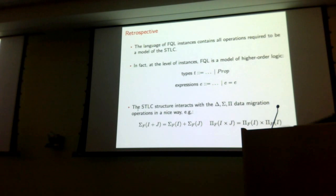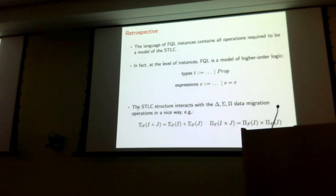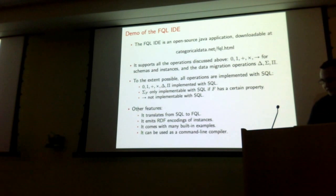The constructions I showed you — products, co-products, and such — behave nicely with respect to the delta, sigma, pi migration operations. For example, if you want to take the sigma of a co-product, you can take the co-product of the sigmas. And then in the few minutes I have remaining, I'm actually going to show the tool that we've developed that does all of this stuff. You can download it here. It has some other interesting features: a translator from FQL into SQL, you can use it as a command-line compiler targeting SQL and RDF.